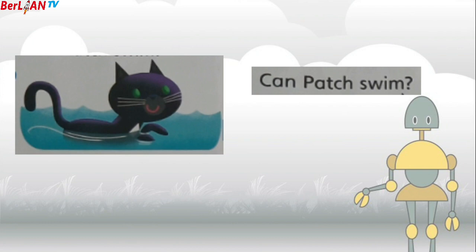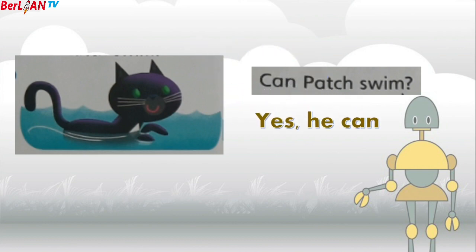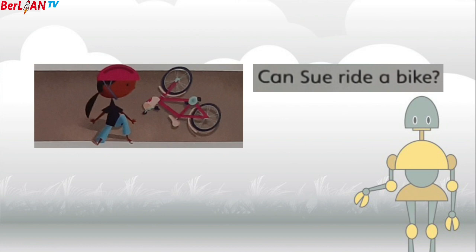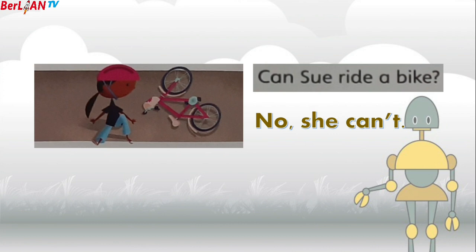Now look at this picture. This is Patch the cat. Can Patch swim? Bisakah Patch berenang? Yes, he can. Ya, dia bisa. And this is Sue. Can she ride a bike? Bisakah Sue mengendarai sepeda? No, she can't. Tidak, dia tidak bisa.